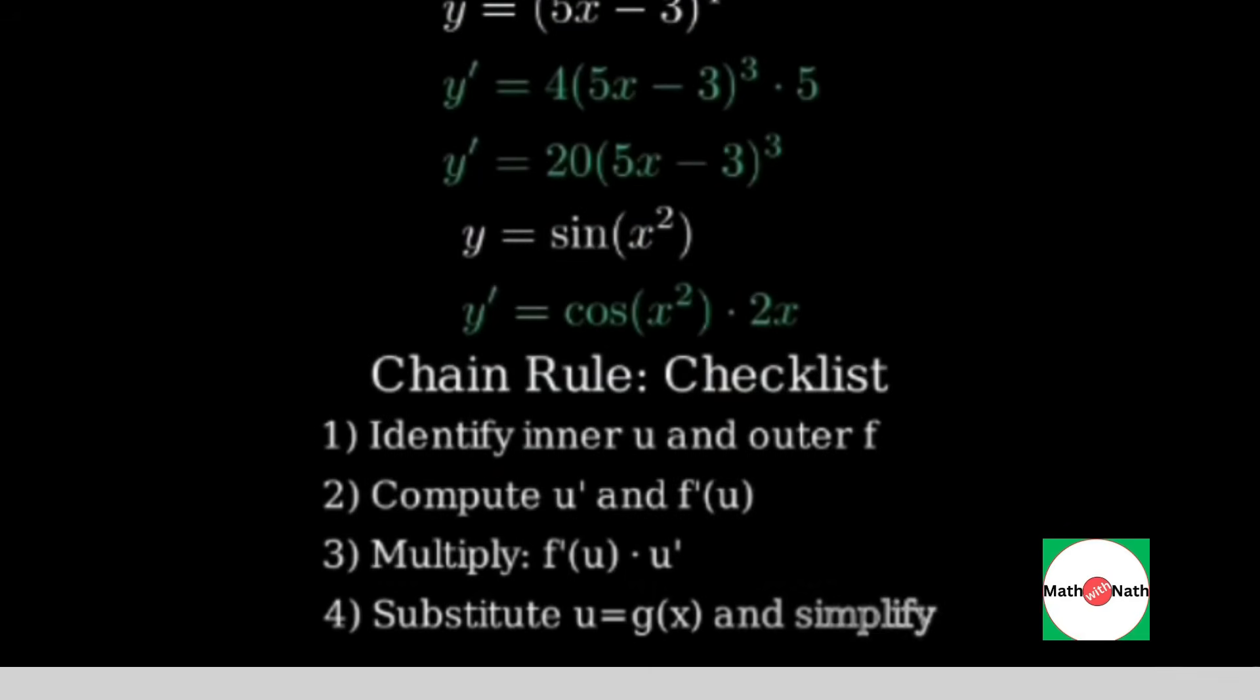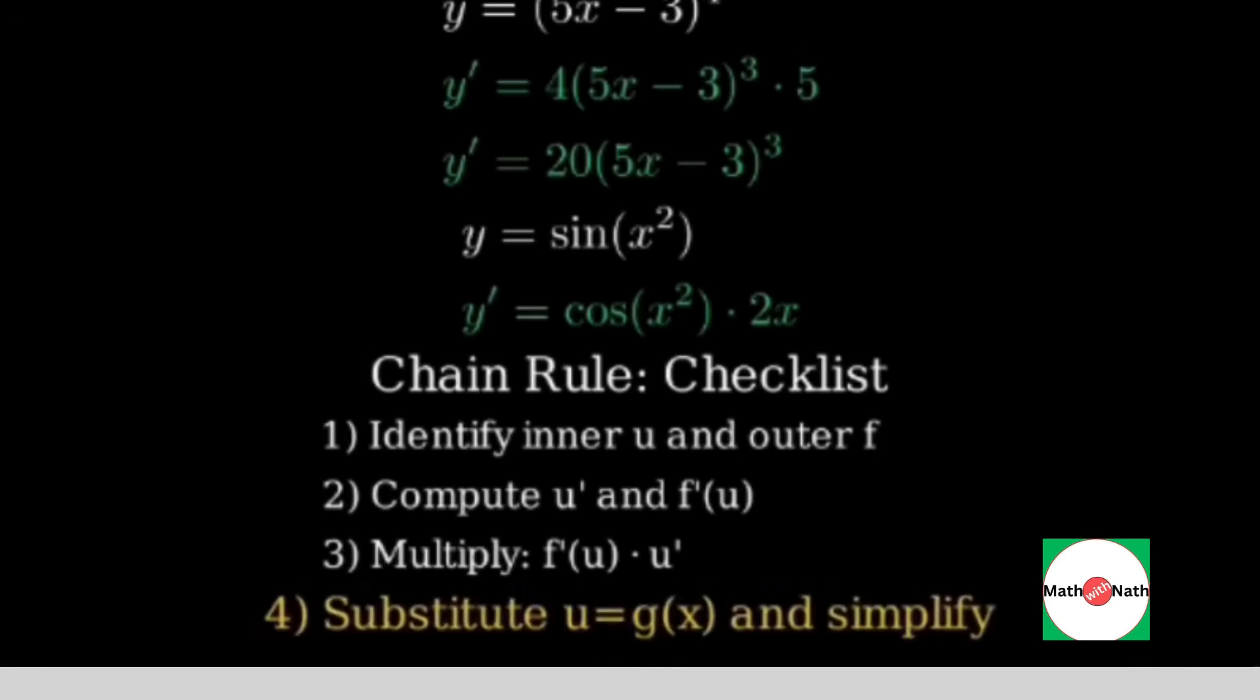Summary. One, identify inner and outer. Two, compute each derivative. Three, multiply outer prime evaluated at the inner times inner prime. Four, substitute back and simplify. That's the chain rule for a function of a function.